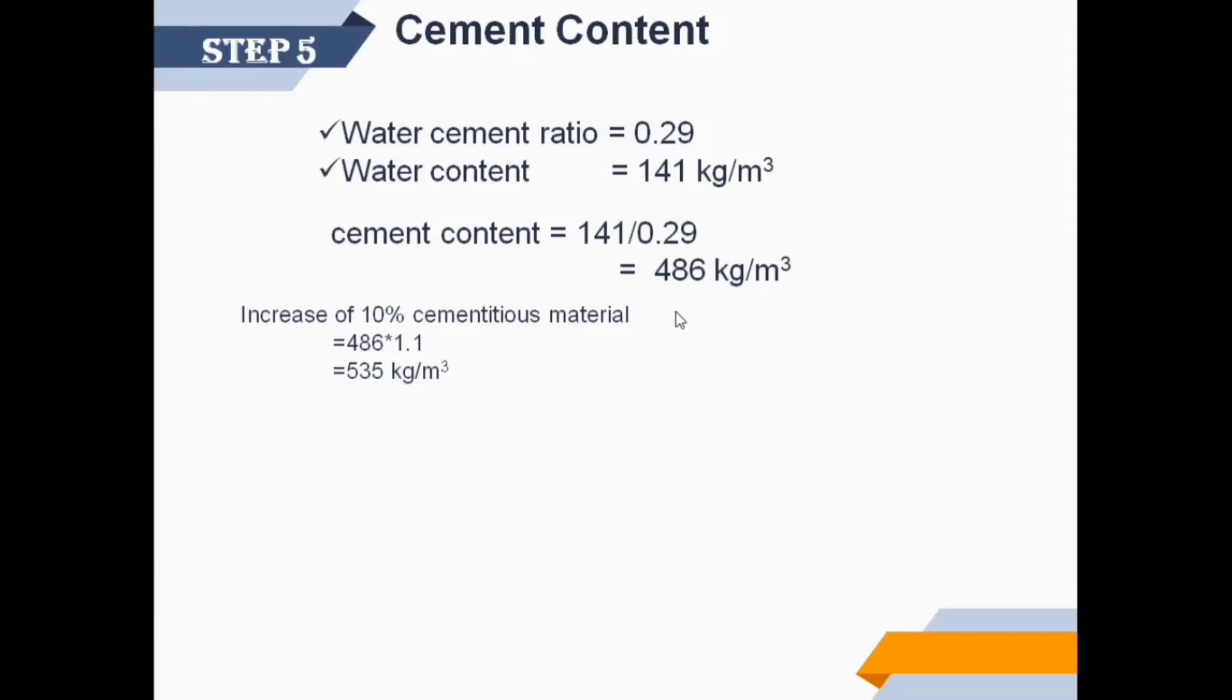We will add fly ash and silica fumes as mineral admixtures. Hence, we increase cementitious material by 10%. We get cementitious material as 535 kilograms per cubic meter. After use of 15% fly ash and 5% silica fumes, you get fly ash quantity as 80.25 kilograms per cubic meter and silica fumes quantity as 26.75 kilograms per cubic meter.